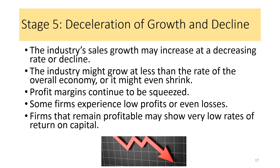At Stage 5, the industry's sales growth may increase at a decreasing rate or even decline. In unfortunate cases, industries suffer declines in sales if product innovation has not expanded the product base over the years. The industry might grow at less than the rate of the overall economy or even shrink. This could be due to obsolescence of the product, competition from new low-cost suppliers, competition from new products, or a switch in demand brought about by better substitutes. Profit margins continue to be squeezed, some firms experience low profits or even losses, and investors consider alternative uses for the capital tied up in this industry.